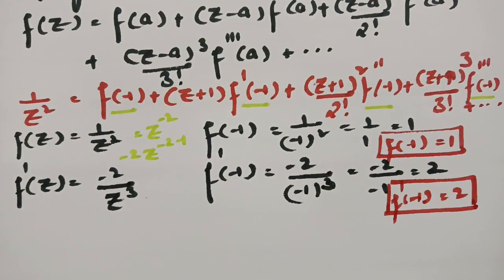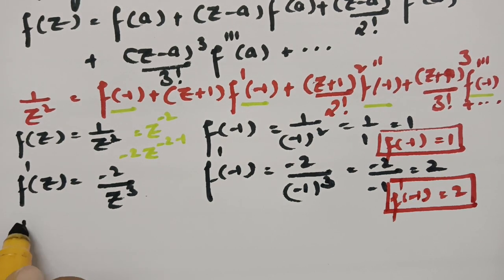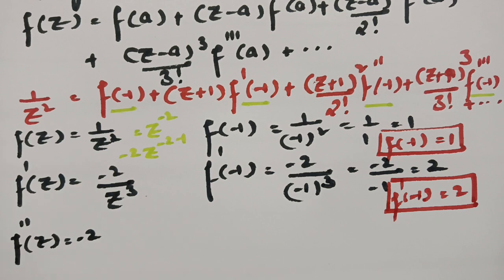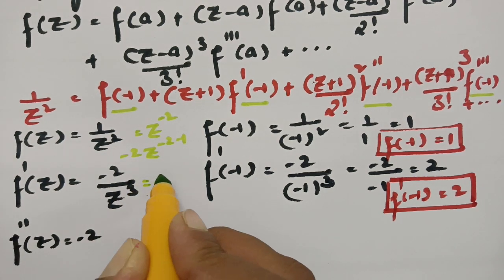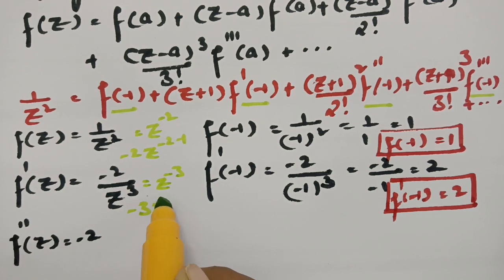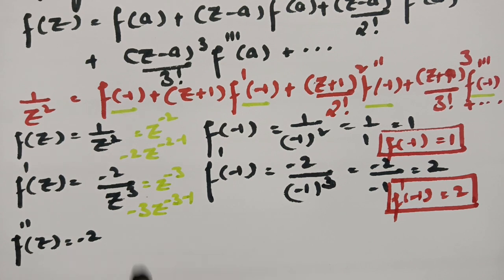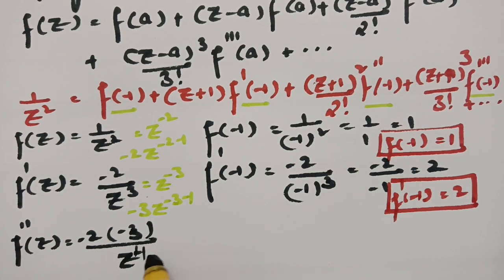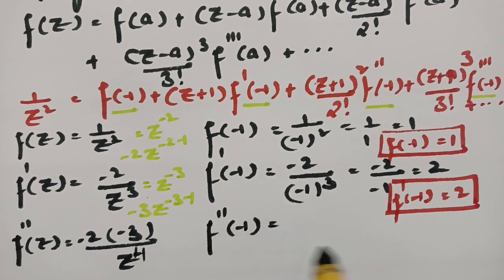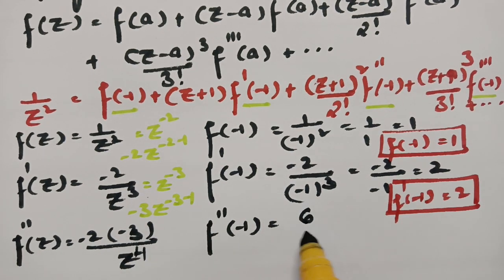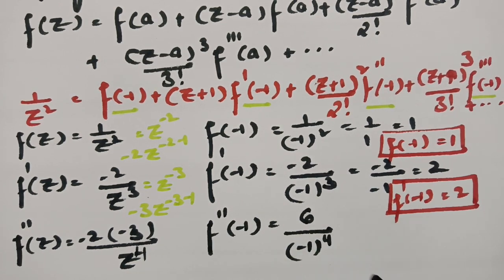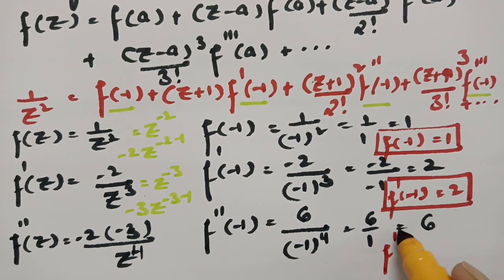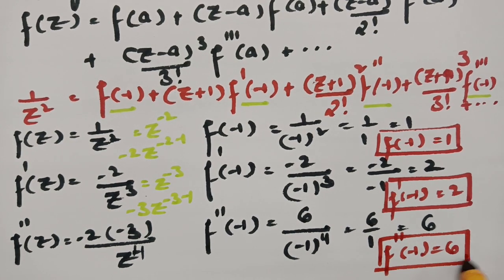Next, f''(z): differentiating −2/z³, where −2 is a constant, and 1/z³ = z^(−3). Using the power rule gives −3·z^(−4), so f''(z) = (−2)(−3)/z⁴ = 6/z⁴. Therefore f''(−1) = 6/(−1)⁴ = 6/1 = 6.